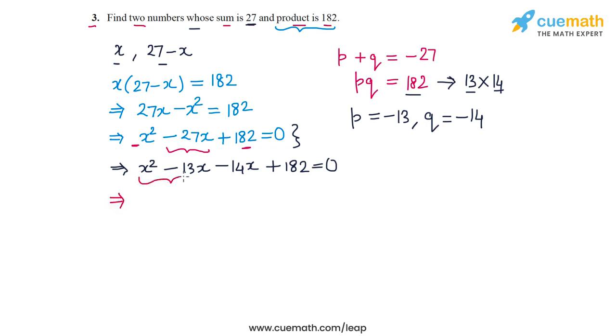Now from the first pair of terms, let's take out a common factor of x. So we get x times x minus 13. And from the second pair, we take out a common factor of minus 14. And once again, we get x minus 13. So this is equal to 0.